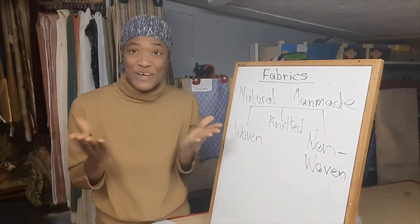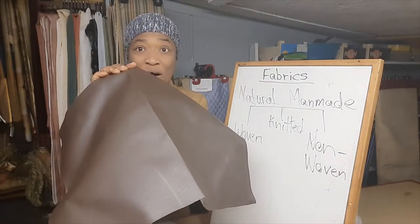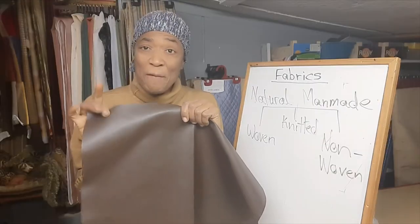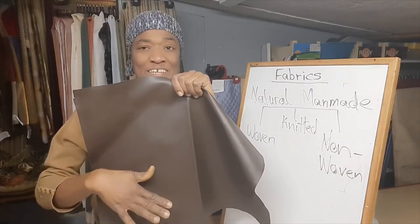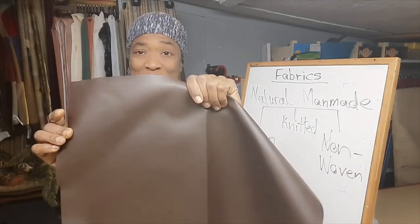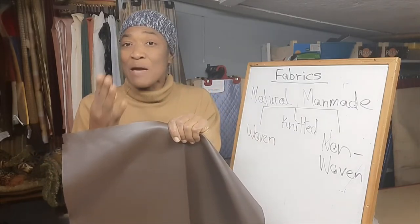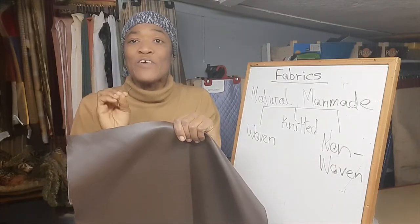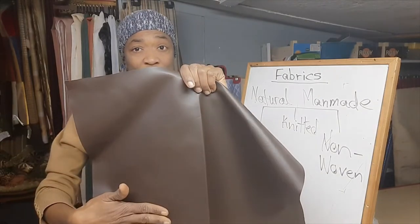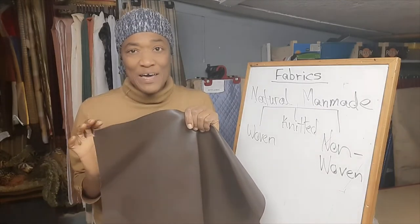Let's look at non-woven. Non-woven fabric — as the name tells you — it's not woven, like your vinyl. But how are they made? They are made by fusing the fibers together, so you see no weave. That is done either through a mechanical process, a chemical process, or some type of heat treatment. Non-woven fabrics are mostly made from man-made fibers.